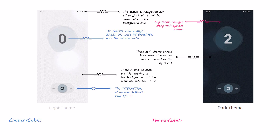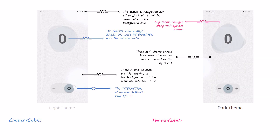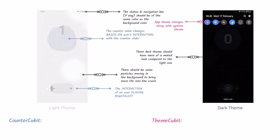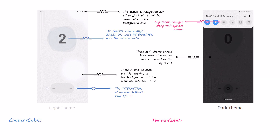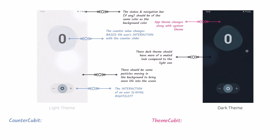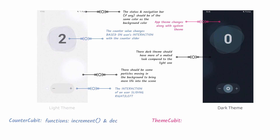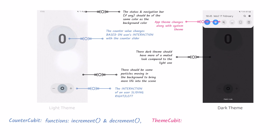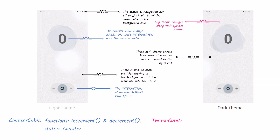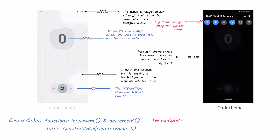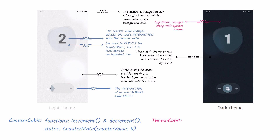In order to implement these two features, we'll probably need two simple cubits — a counter cubit and a theme cubit. The next step is to imagine what functions and states these cubits will work with. Whenever the user slides left, the counter will decrement; whenever the user slides right, the counter will increment. The counter cubit will contain two functions named increment and decrement, which will either increment or decrement the current counter value. Each time a new counter value is calculated, the counter cubit will emit a new counter state containing that value throughout its stream of outgoing states.